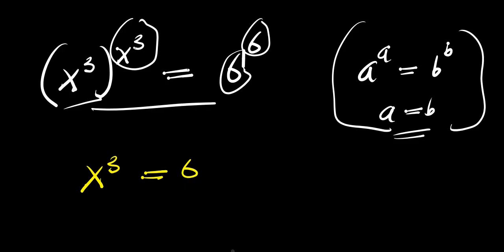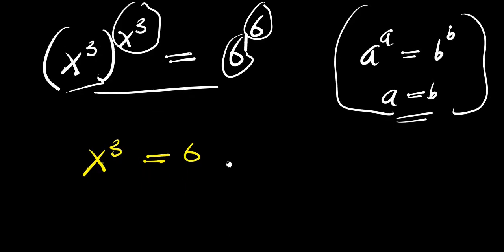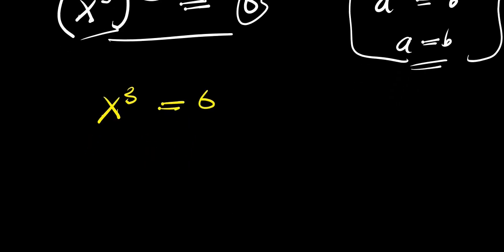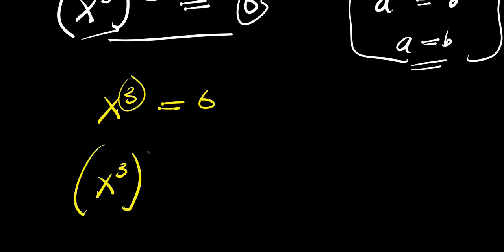We need to solve for x, and for us to solve for x we need to eliminate this exponent. We have x to the power of 3 — I raise this to the power of 1 over 3, and this equals 6, and I also raise it to the power of 1 over 3.